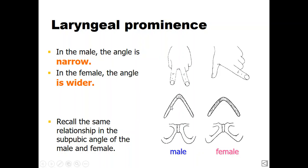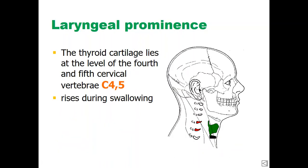The angle between the index and middle finger represents the male fusion angle. We can also recall the relation between the hip bones in male and female — the subpubic angle is wide in females while it is acute in males. These comparisons help explain why the Adam's apple is more prominent in males.